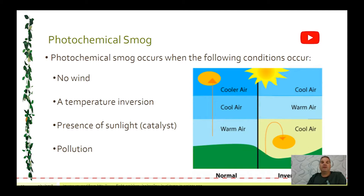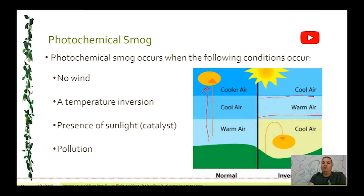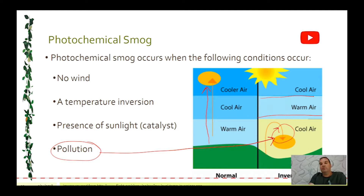Photochemical smog occurs when we have what's called a temperature inversion. Normally, as you go up from the surface of the earth, the temperature decreases, because the warm infrared radiation from the surface dissipates as it goes up. With a temperature inversion, you get a warm blanket of warm air above the cooler air, which stops the cool air from rising and mixing. Any pollutants in that cooler air stay trapped and build up, and that pollution is what leads to the presence of photochemical smog.